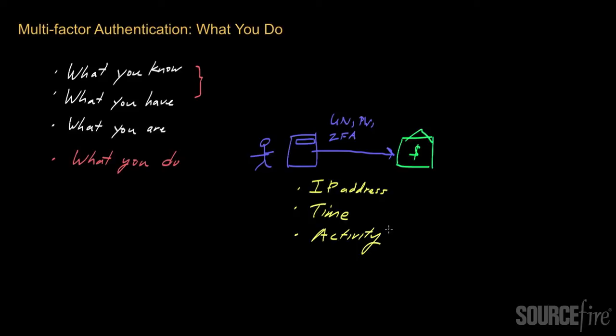And in that case, if the bank notices that some attributes of your session are anomalous, they can do things. What can they do? They can obviously do things like block the transaction. They can ask you for more information.